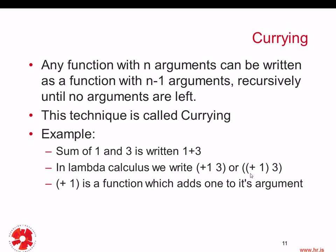In this case, we can look at plus one as a function which adds one to its argument. Instead of looking at this as the function plus taking two arguments, we write it as a function that takes one argument. The function plus one takes one argument — three in this case — and plus one is a function which adds one to its argument. This is the basic idea: convert a function that has n arguments to a function that has n minus one arguments, and we can do this recursively.